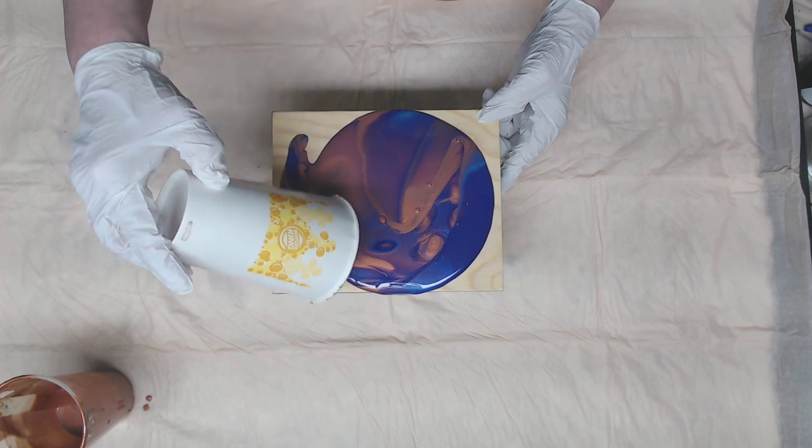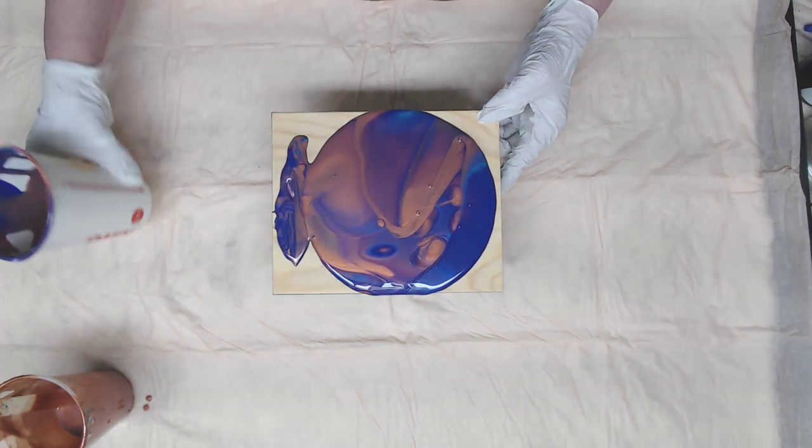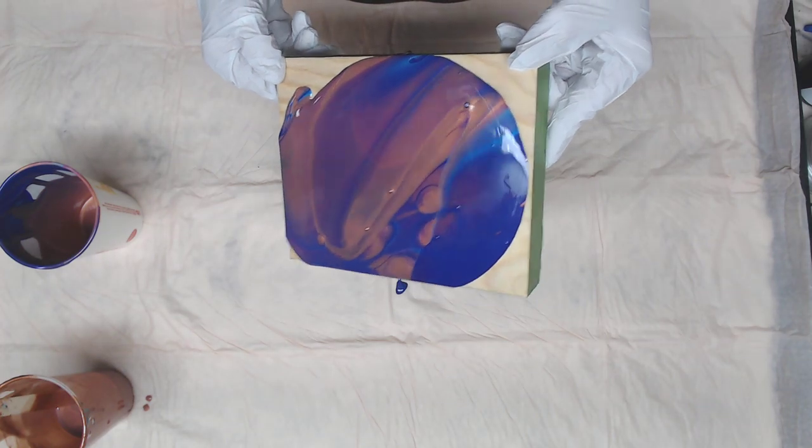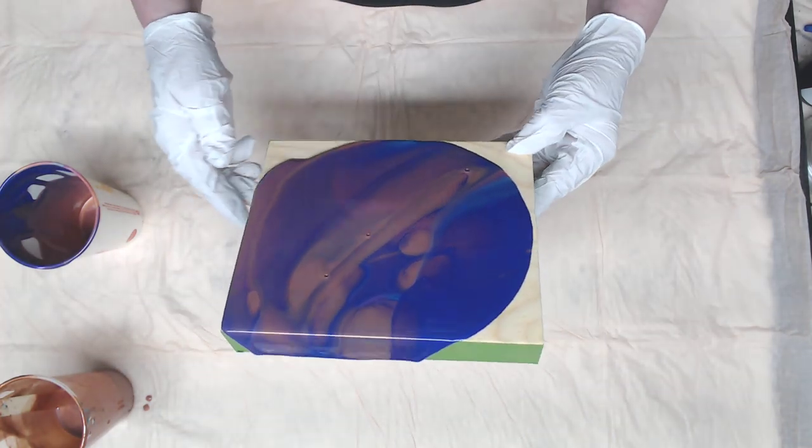I already see that iridescent in there. And I'm going to lose it because it's coming over this edge. But hopefully it'll pop up when we torch. Because we're going to get some cells.